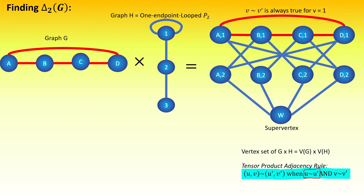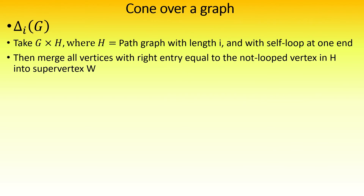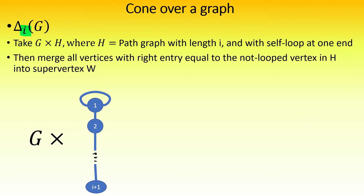Also, notice the difference between the Michelsky construction and the cone construction. The cone over a graph gives us a parameter to think about, i, which is the length of the path graph that we take the tensor product with g of. If g is a graph without isolated vertices, delta sub 2 of g is the Michelsky graph of g, meaning the cone construction encompasses the Michelsky construction. However, we can also build all kinds of graphs that we could not build with a Michelsky construction by using an i not equal to 2.